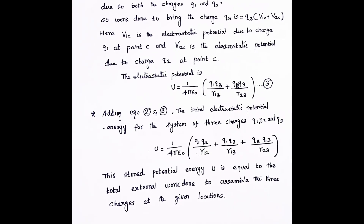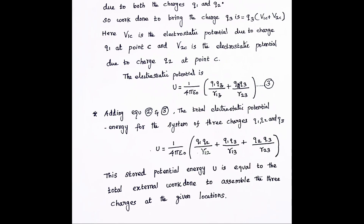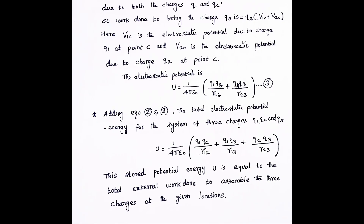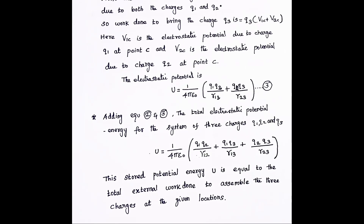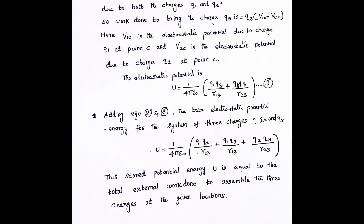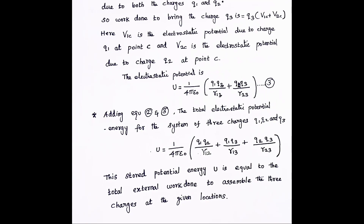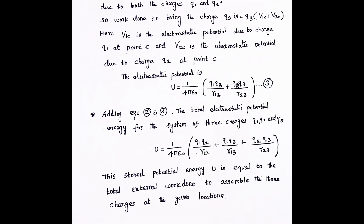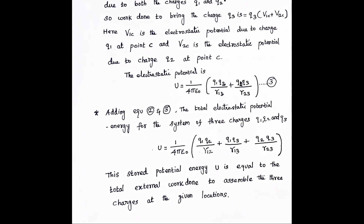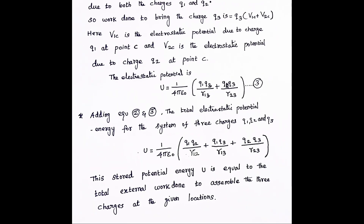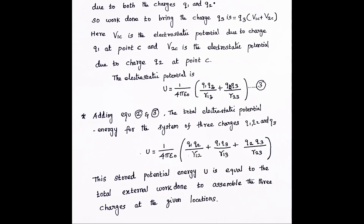This stored potential energy U is equal to the total external work done to assemble the three charges Q1, Q2, Q3 at the given locations A, B, and C. The sum of all work done during this assembly is the electrostatic potential energy of the three-charge system.